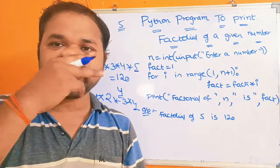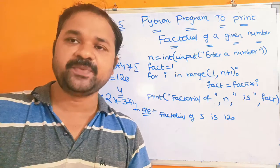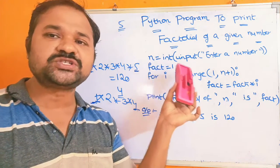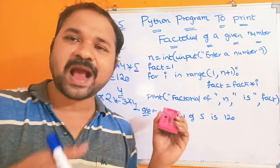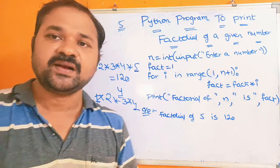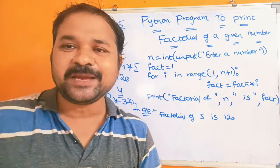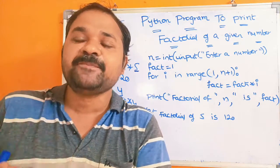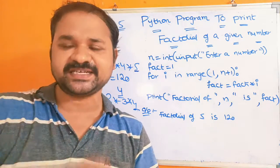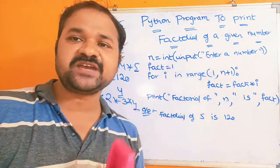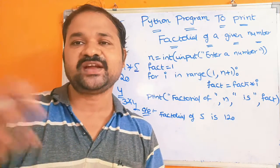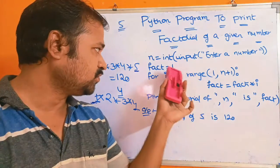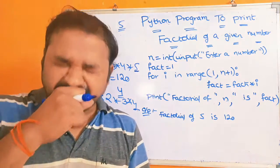In order to determine the factorial of a number, we take a variable called fact whose initial value is 1. Why? Because we have to perform multiplication, and 1 multiplied by anything equals that number — the result won't change. That's why the initial value of fact is 1.